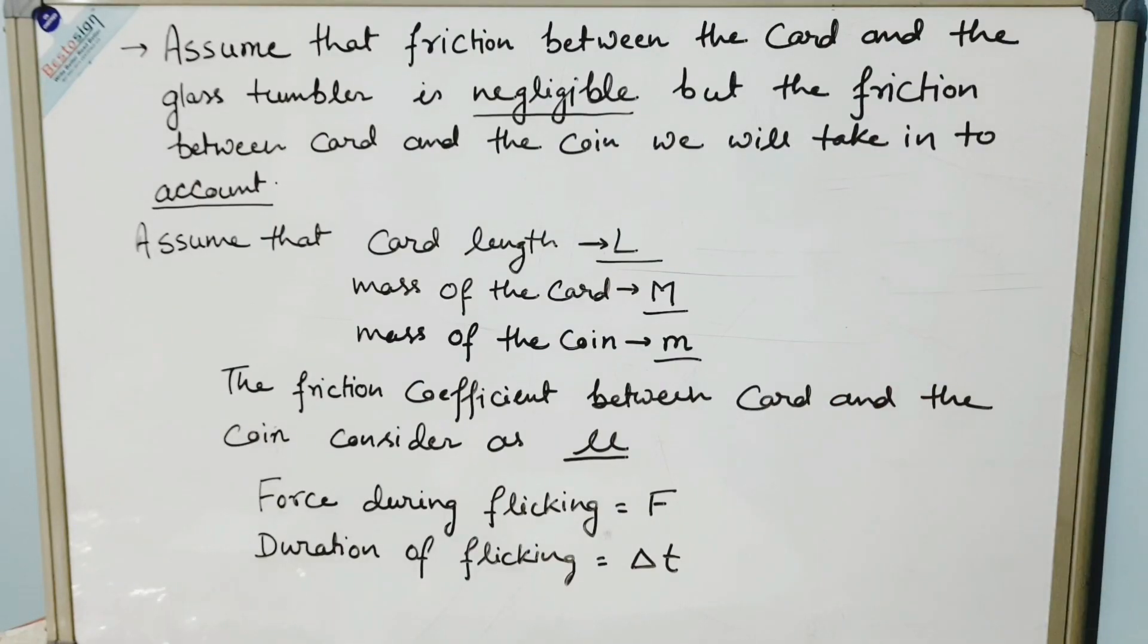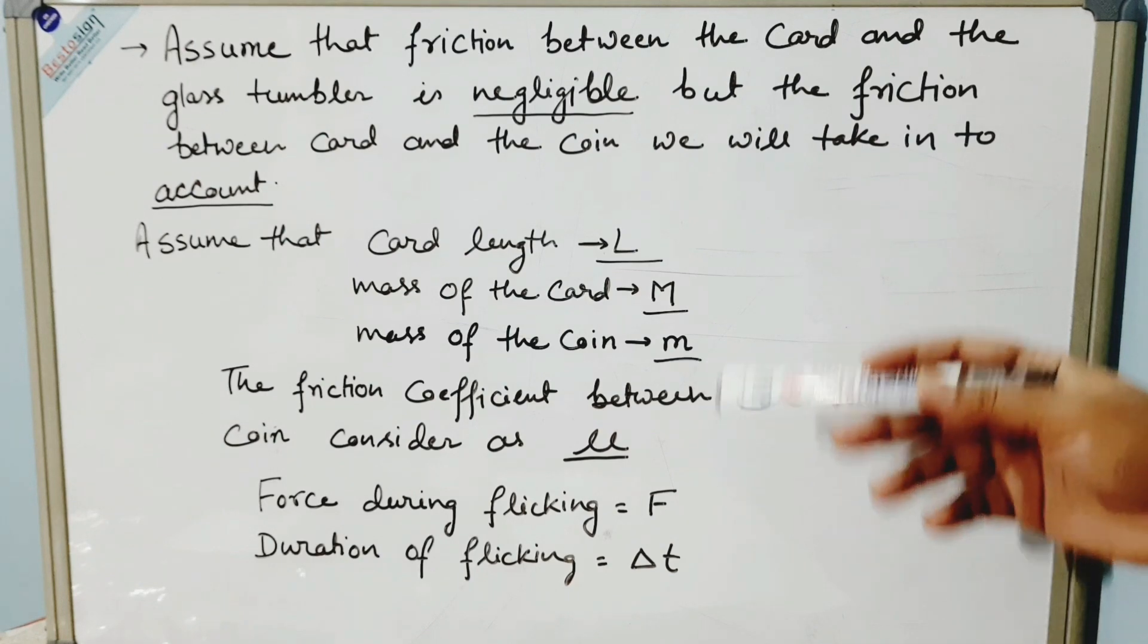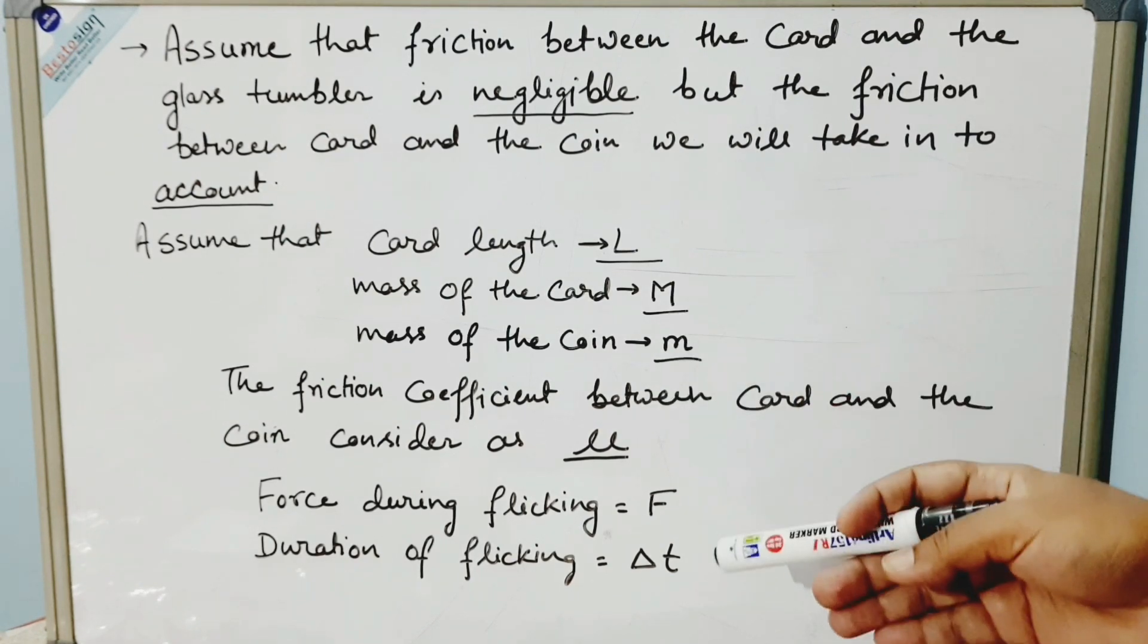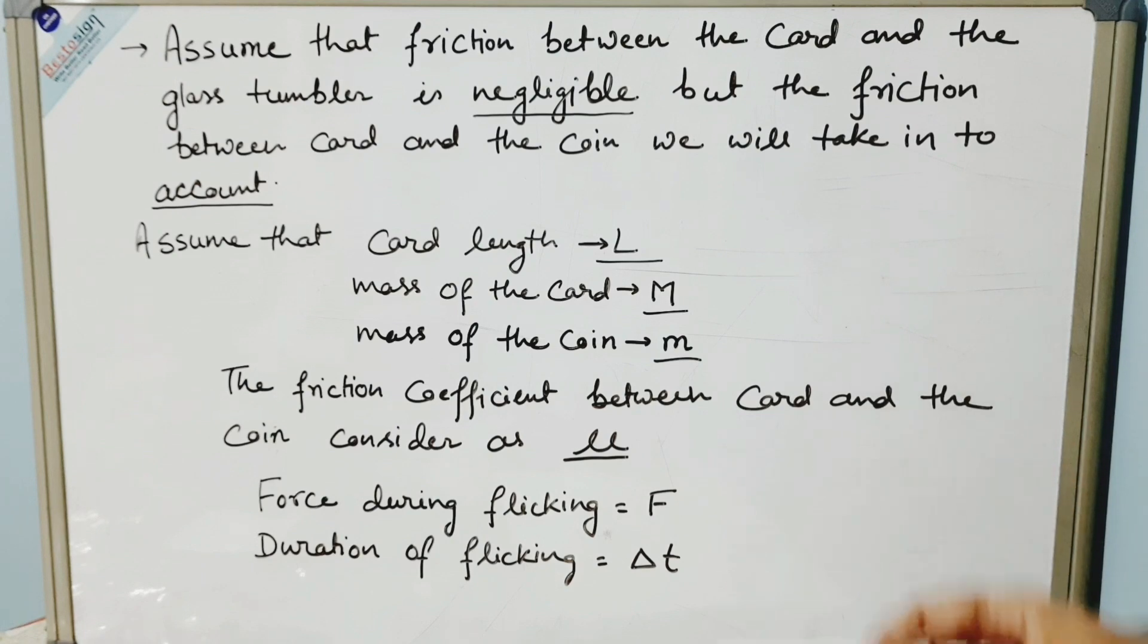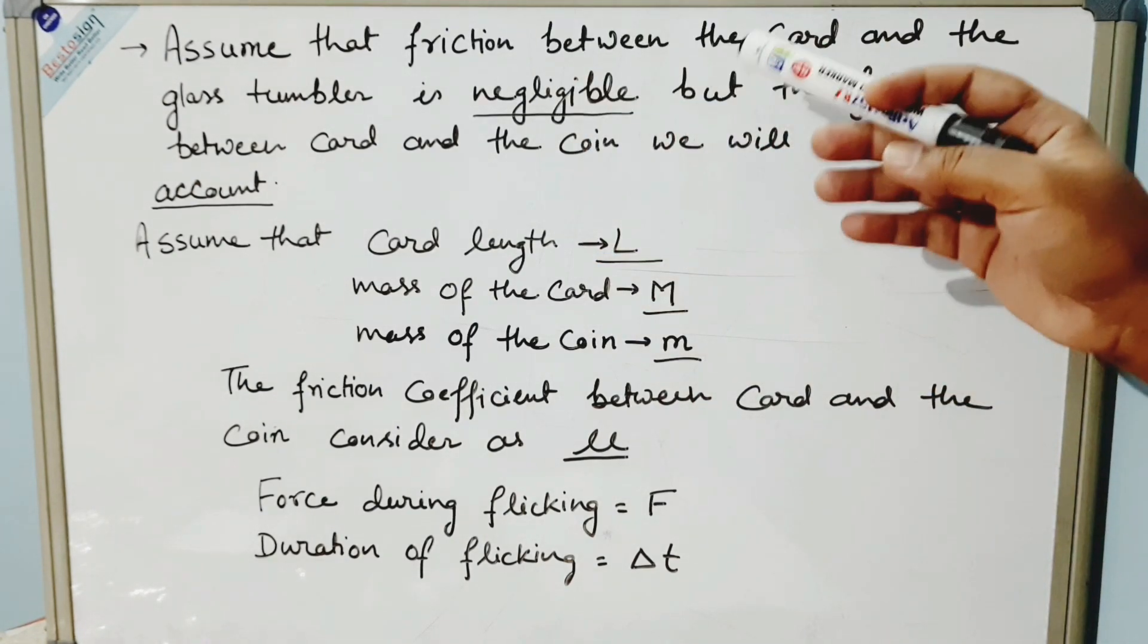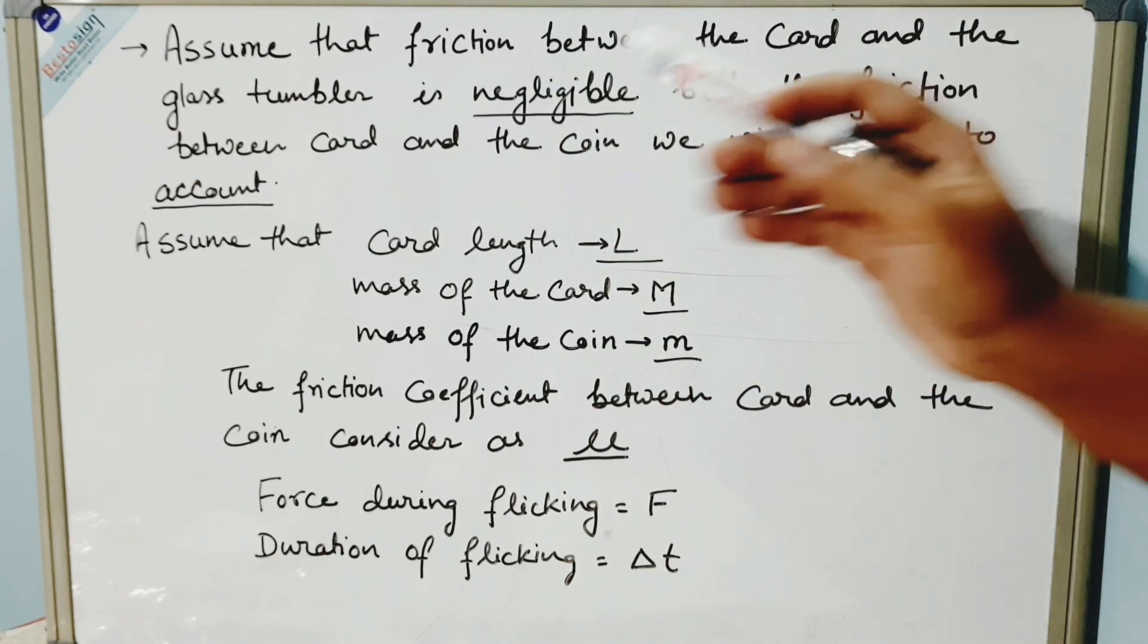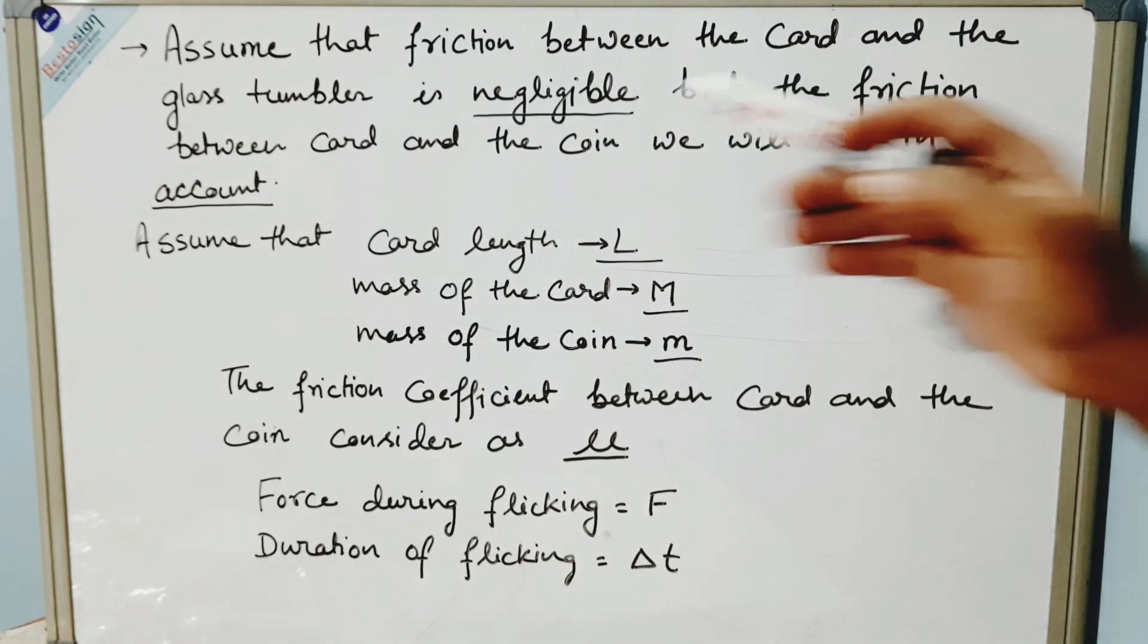Through this mathematical calculation, we are going to understand what are the factors which affect the falling of the coin inside the tumbler. Assume that friction between the card and the glass tumbler is negligible.